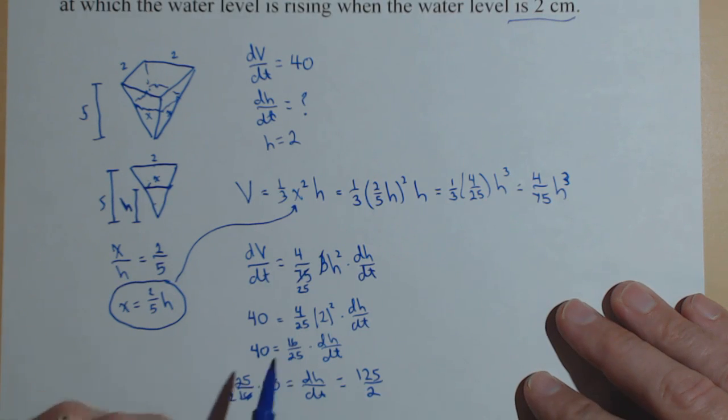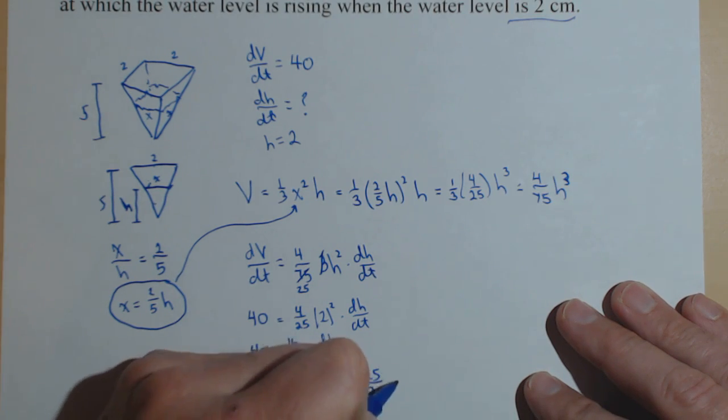Now the units. Here's what's nice about this notation. I don't have to memorize anything. The units come right from here. dh, h was measured in centimeters. And dt, time was in seconds. So this is centimeters per second.